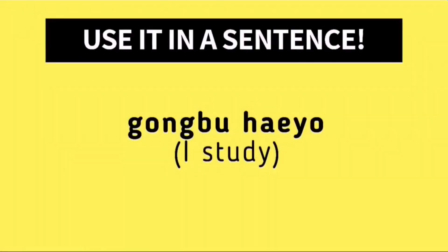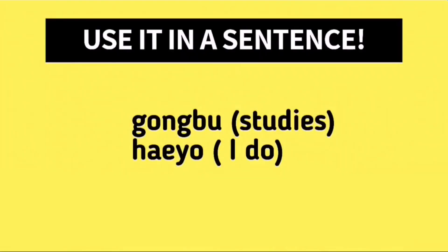Now let's try looking at this example. It says Kongpu Heo. In English, this is translated as I study. This sentence can be subdivided into two parts: Kongpu is a noun for studies, and Heo is the present tense form of Hada, which means I do.